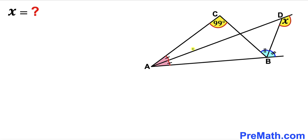Welcome to pre-math. In this video we have got two triangles, triangle ABC and triangle ABD, put together as shown in the diagram, such that angle ACB is 99 degrees, the two pink angles are congruent, and the two blue angles are congruent as well. Our task is to find the value of angle X.